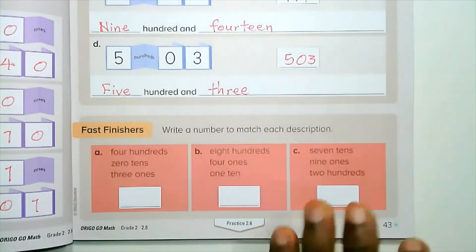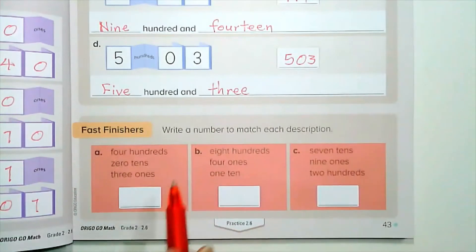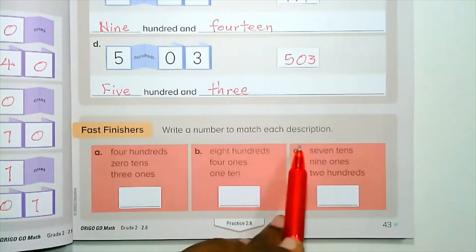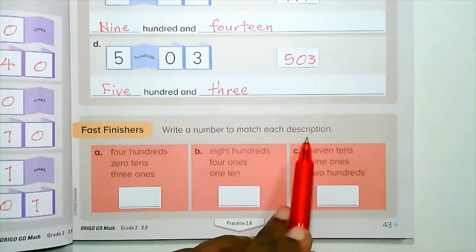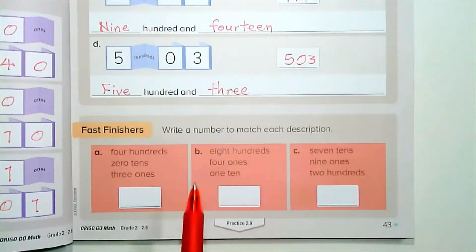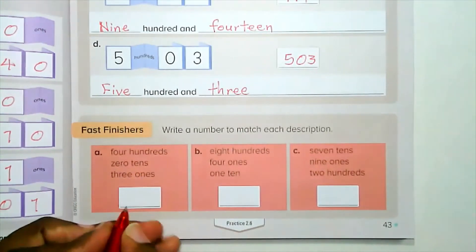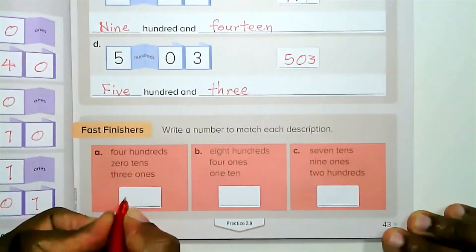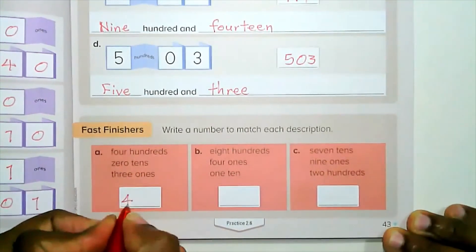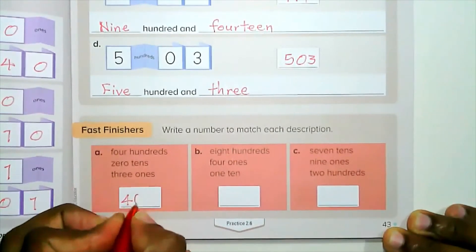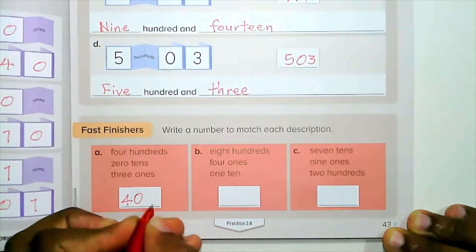Now for the fast finishers: write a number to match each description. Part A: four hundreds, zero tens, three ones — so we'll write four hundred and three.